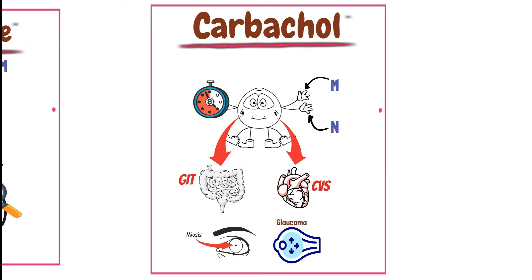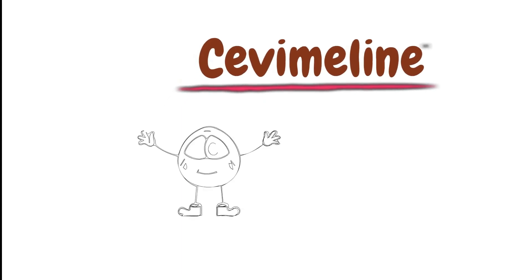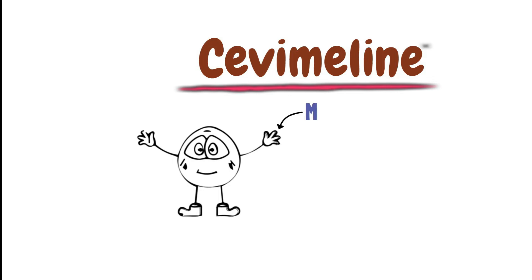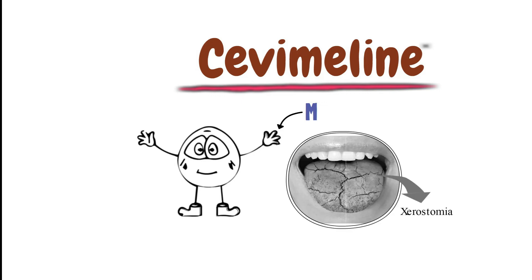The following agent is cevimeline. Cevimeline acts as a direct cholinergic agonist and mainly works on muscarinic receptors. Therapeutically, it is orally used for xerostomia, or dry mouth.